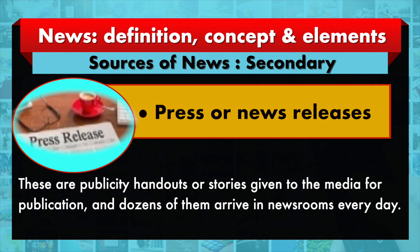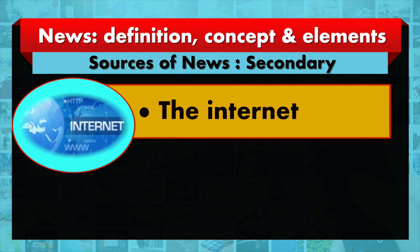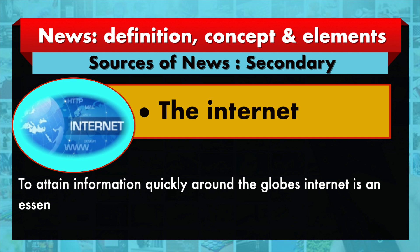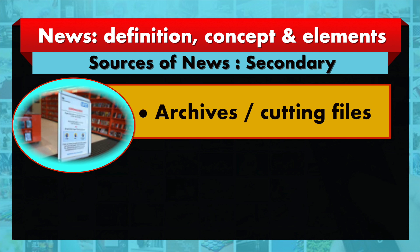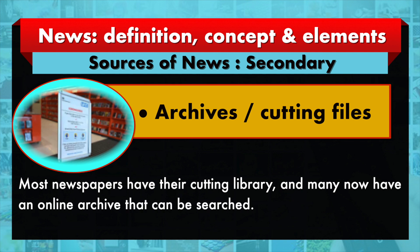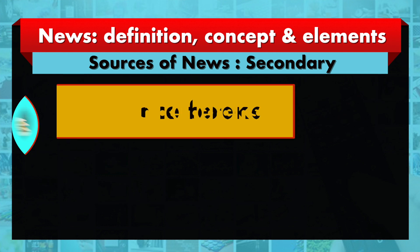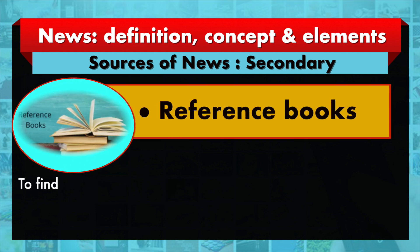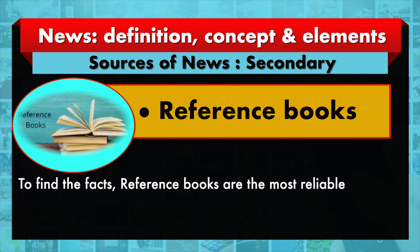The second one is press or news releases — these are publicity handouts or stories given to the media for publication, and dozens of them arrive in newsrooms every day. The third one is the internet — to attain information quickly around the globe, the internet is an essential source of news. The fourth one is archives or cutting files — most newspapers have their cutting library and many now have an online archive that can be searched. The fifth one is reference books — to find the facts, reference books are the most reliable source of information.